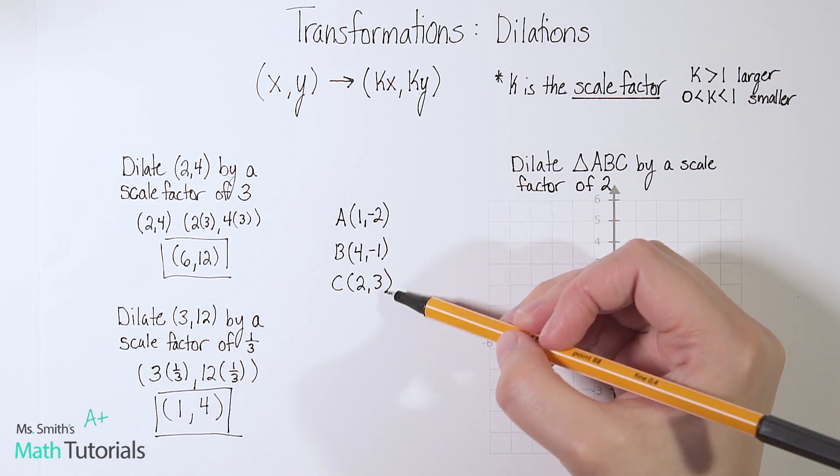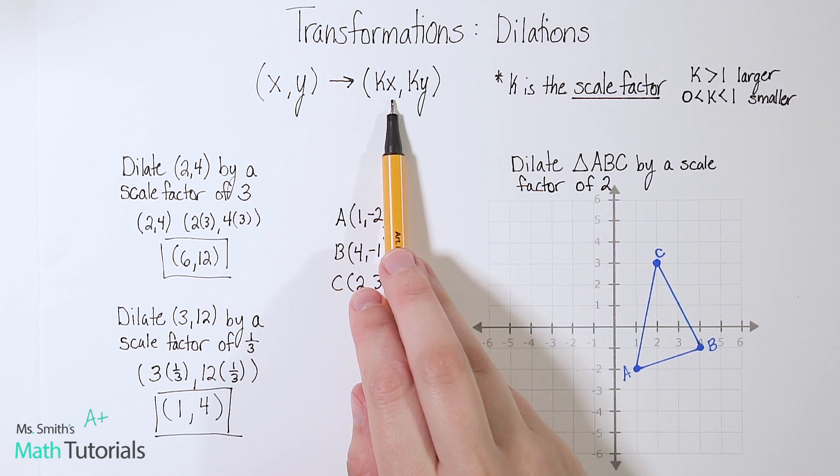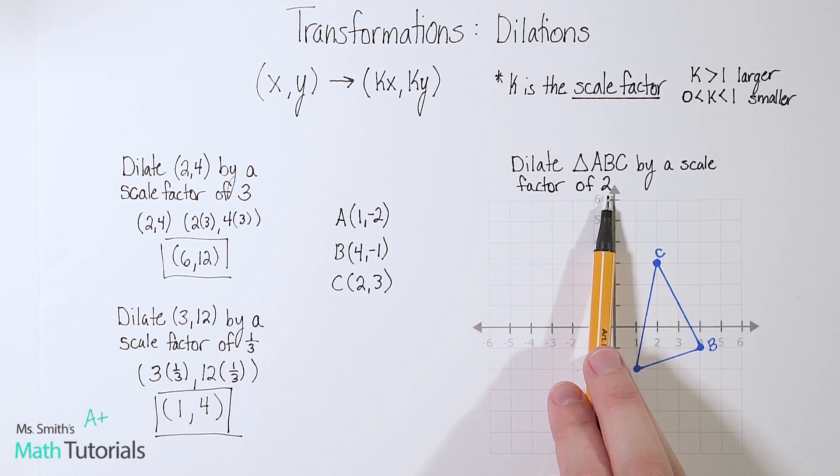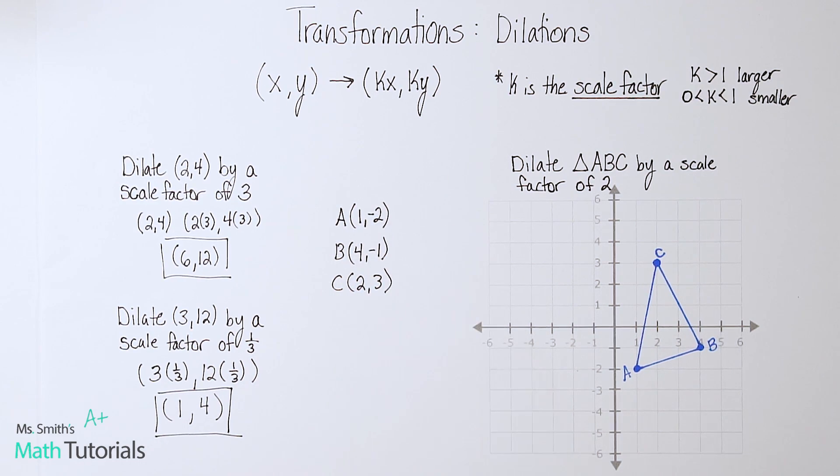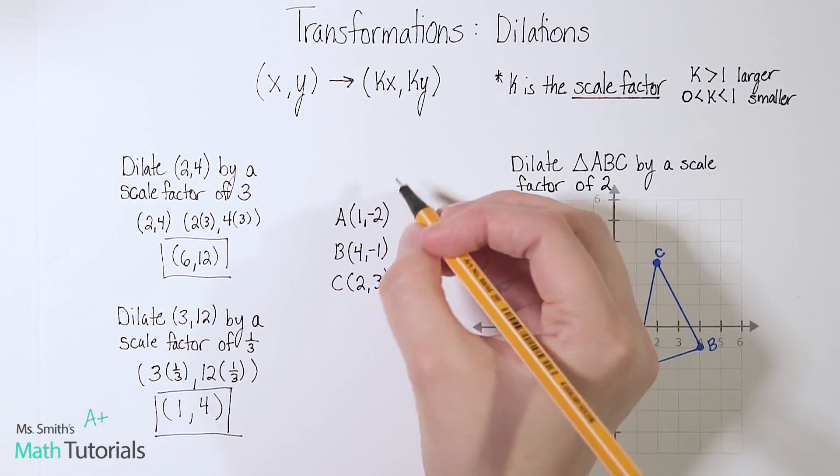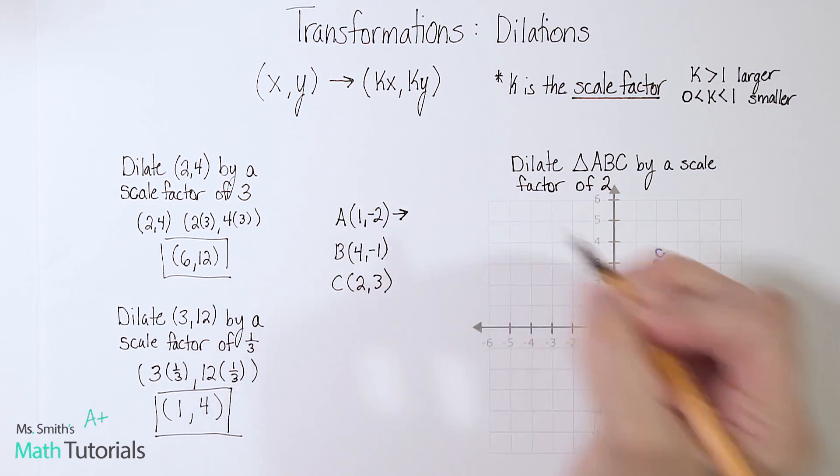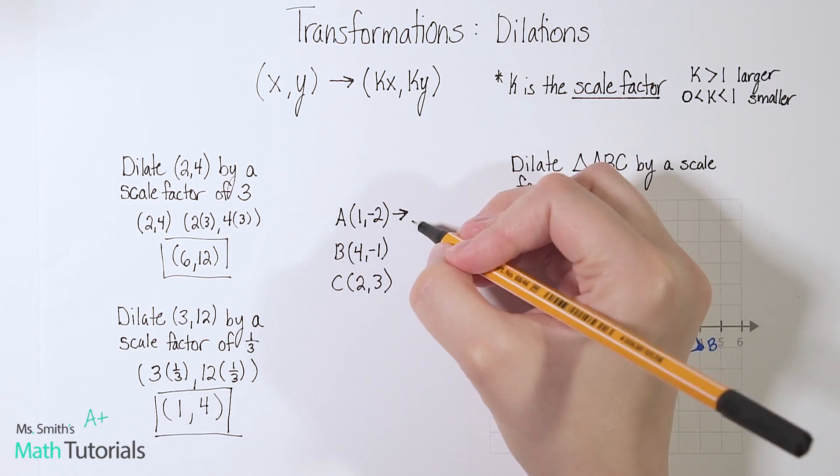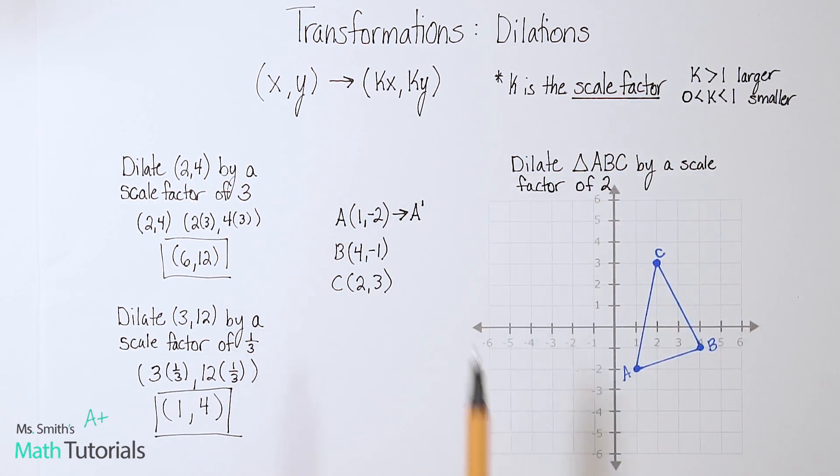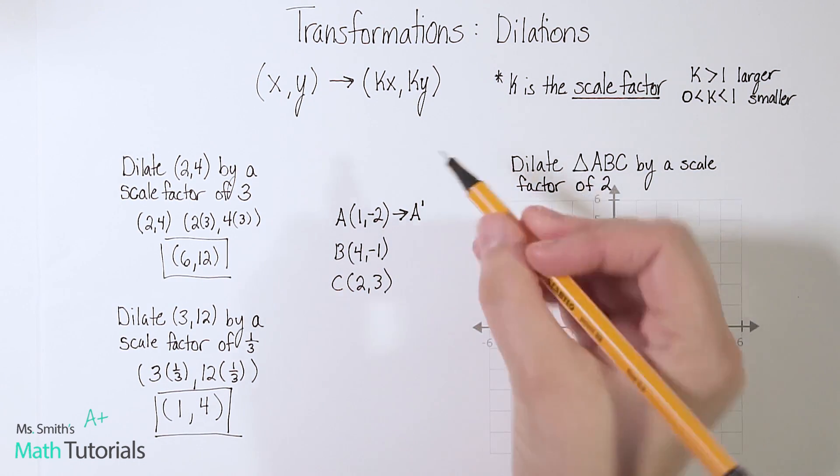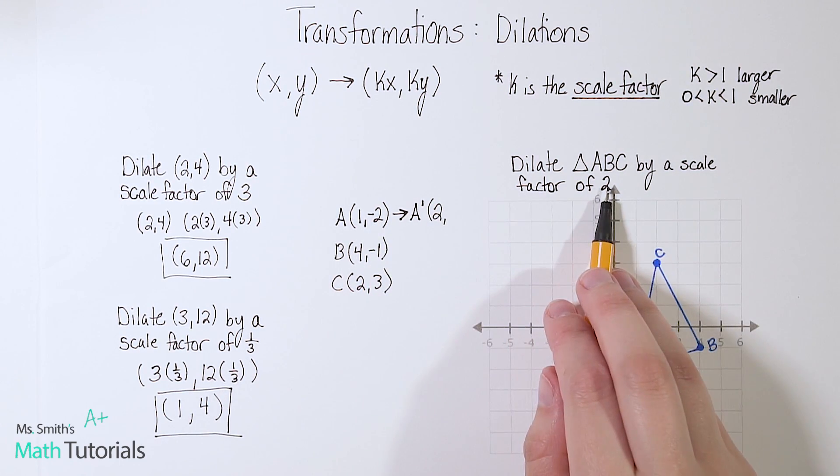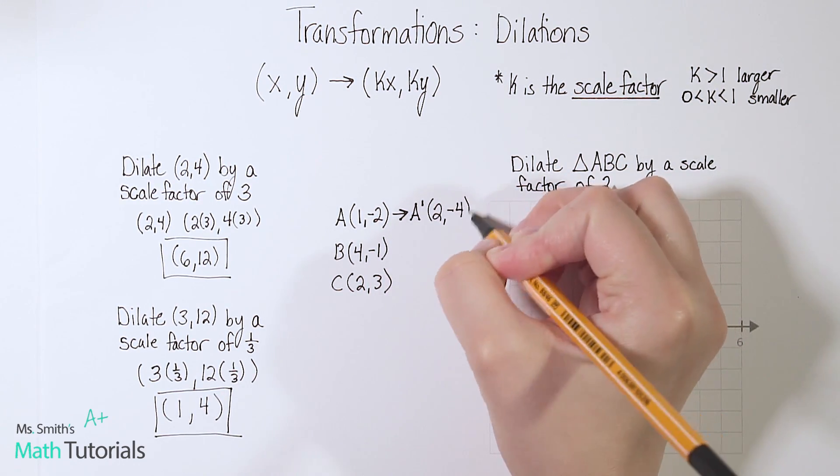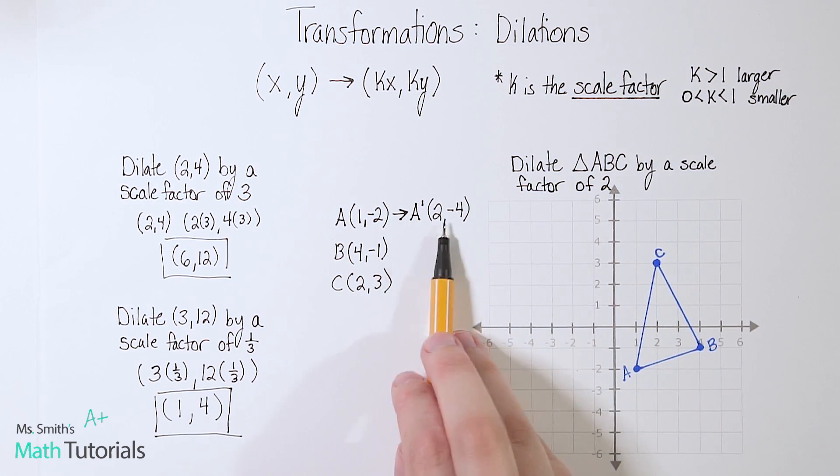So that's where my points currently are. So I'm going to follow this rule, remembering that my scale factor is 2. So I'm going to multiply each x and each y by 2 to get a new point. So this A is going to become, now the way we write this in math is we say A prime. So let's follow that rule. 1 times 2 is 2, and negative 2 times 2, that would give me negative 4. So that's going to be my new point for A.